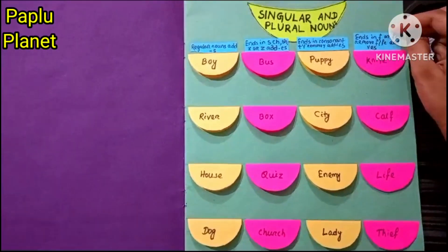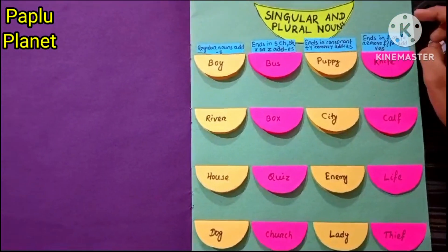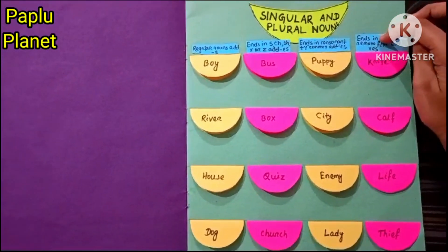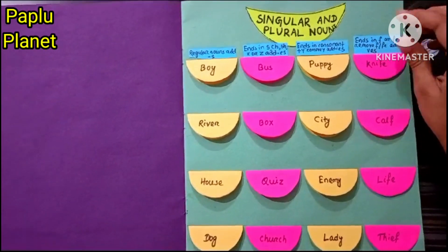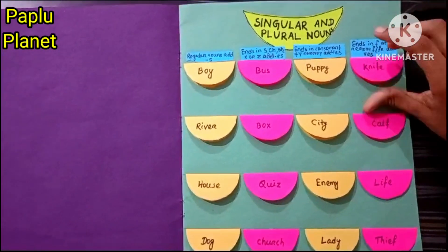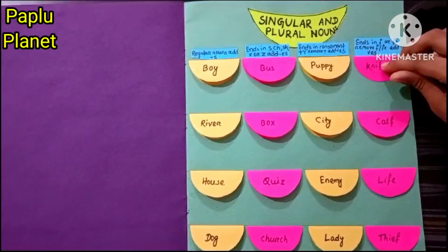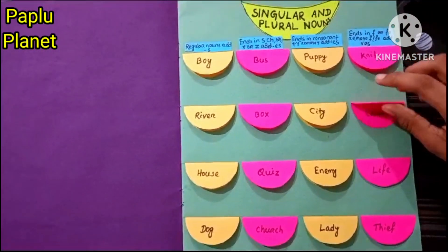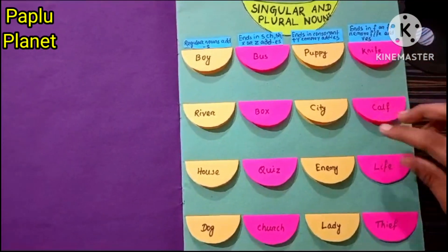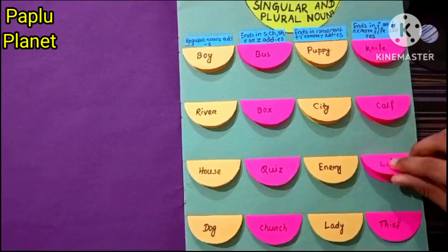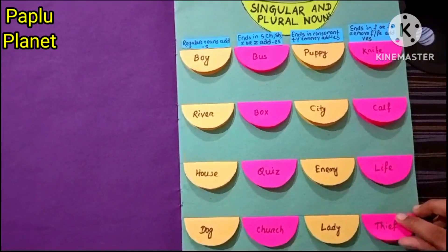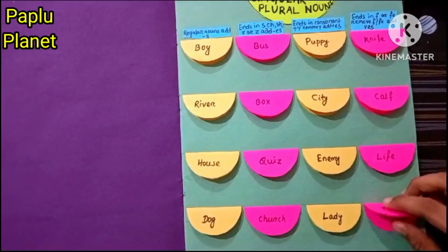Ends in F or FE — remove F or FE, add VES. For example: knife/knives, life/lives, thief/thieves.